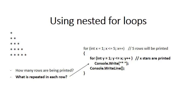The next thing to note is that printing a row means printing stars next to each other, so we use console.Write. Then once you've printed the whole row you need to jump to the next line, so that the next row starts on the next line. For that you need a console.WriteLine after the inner for loop.